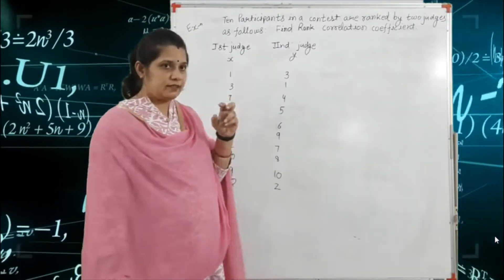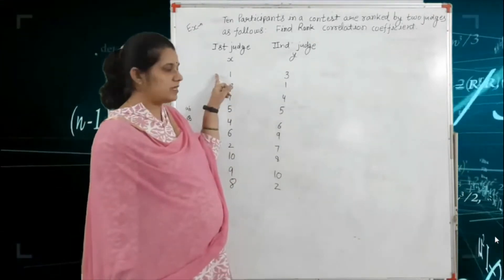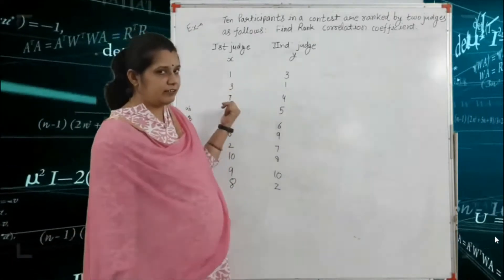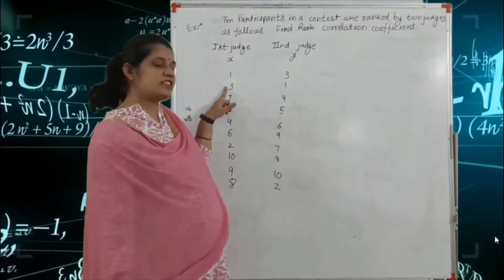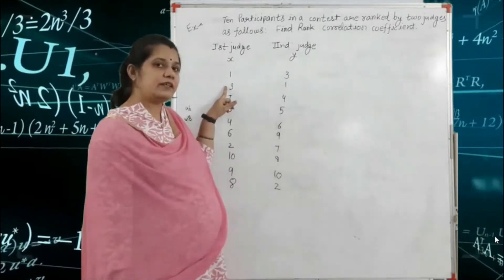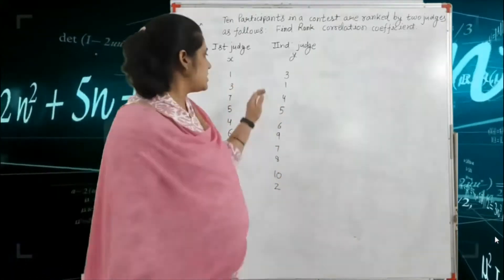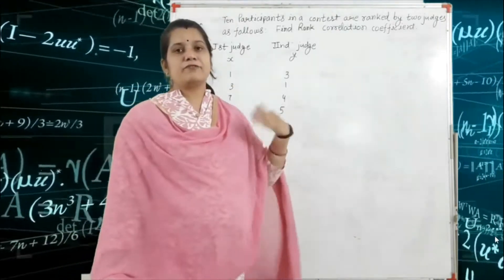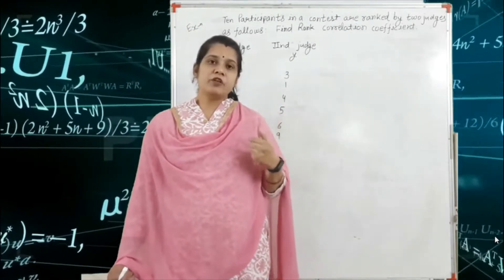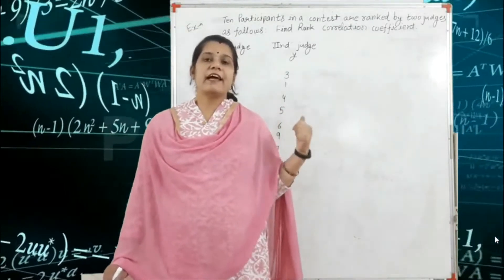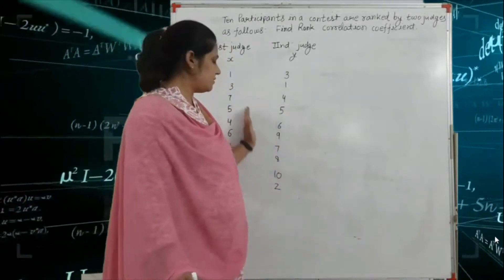That means if the first contestant is given the first rank by the first judge, the second judge gives the third rank. In the second contestant, the first judge gives the third rank, so the second judge gives the first rank. One important point: here the ranks are not repeated — all the ranks are distinct.